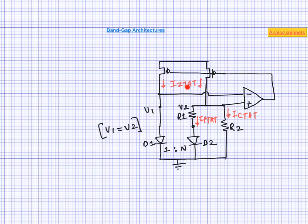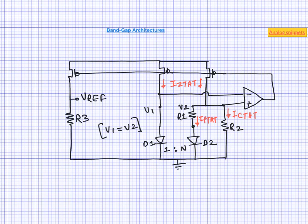Here 'Z' stands for zero temperature coefficient. To generate the reference voltage we simply dump this temperature-independent current into another resistor, so we no longer need to add a diode to generate the reference voltage — because the current itself is now temperature-independent. By choosing different resistance values or different current values, we can generate any desired reference voltage.